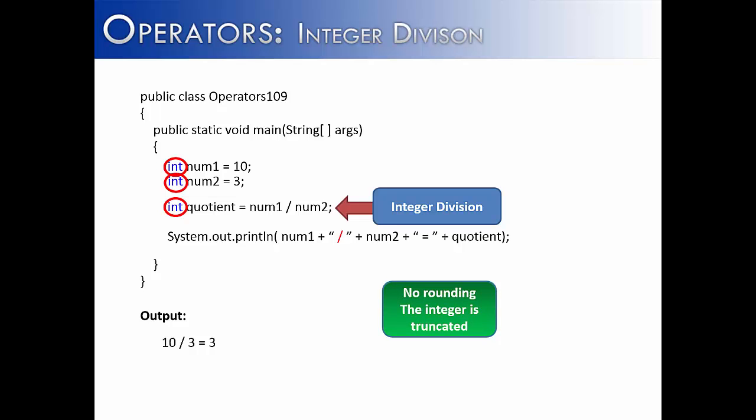And the decimal place is just going to be truncated or lopped off. So 10 divided by 3 in Java would just be 3. It doesn't matter if the real result should be 3.9 or 3.8 or 3.2. That decimal place is just going to go away. There's no rounding. The value is simply truncated.